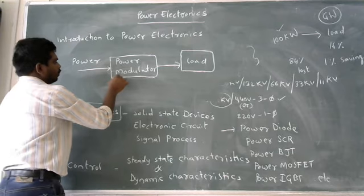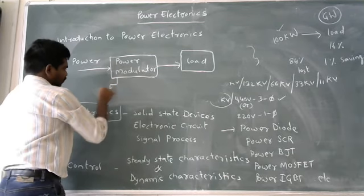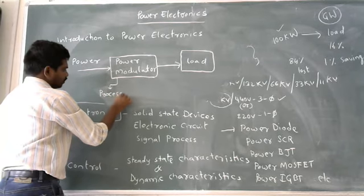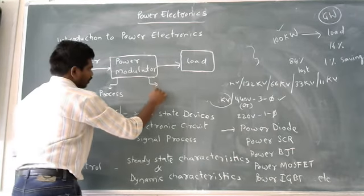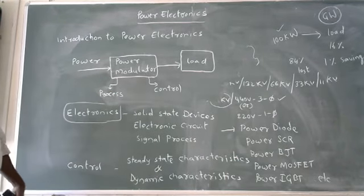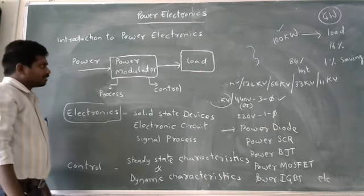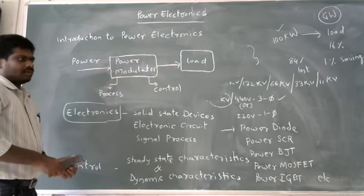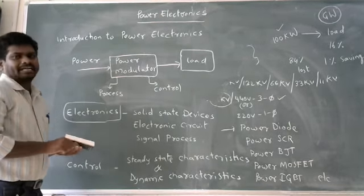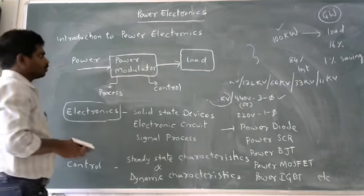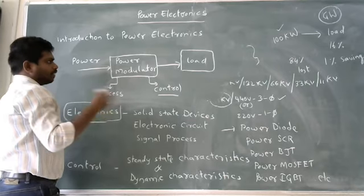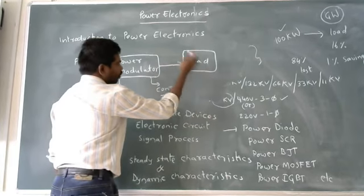The power electronics are going to serve two purposes: one is process, other one is control. We can define power electronics like this: power electronics is a circuit which is going to process and control the electrical power, so that the controlled electric power is going to be pumped to the loads.